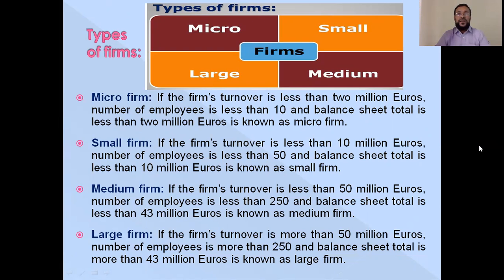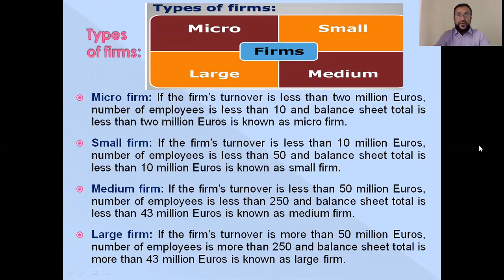A small firm has turnover less than 10 million euros, fewer than 50 employees, and balance sheet total less than 10 million euros. A medium firm has turnover less than 50 million euros, fewer than 250 employees, and balance sheet total less than 43 million euros. A large firm has turnover more than 50 million euros, more than 250 employees, and balance sheet total more than 43 million euros.